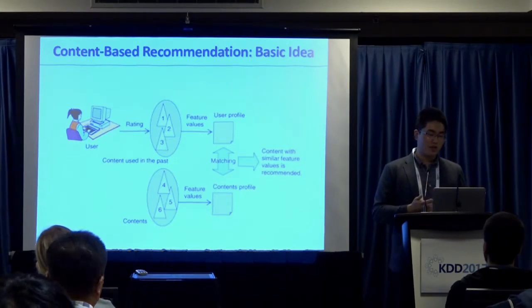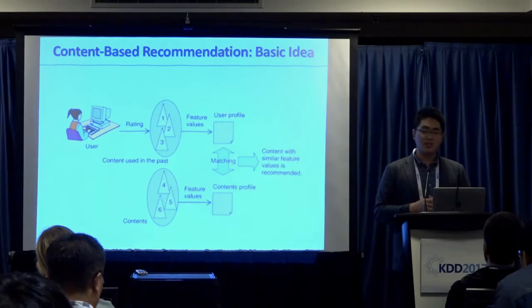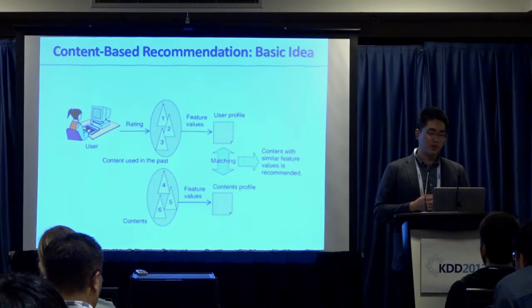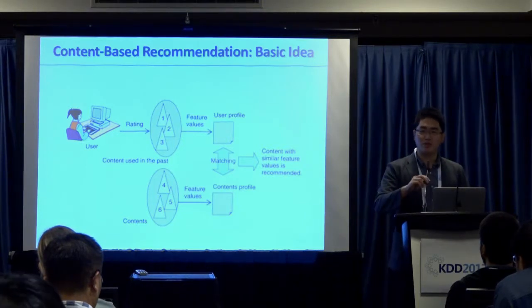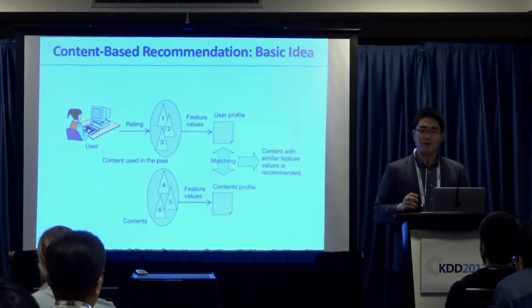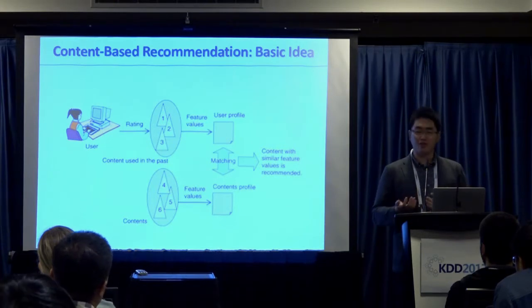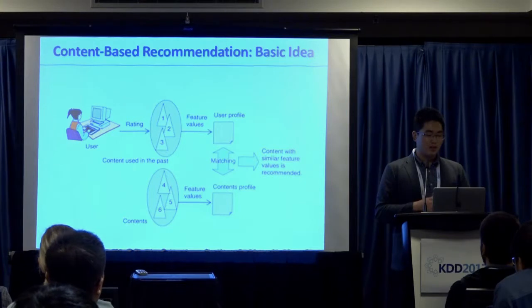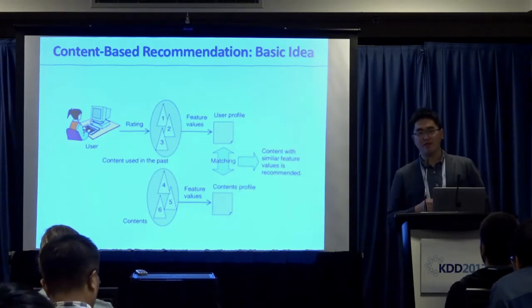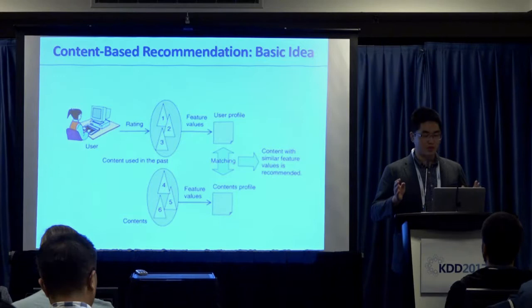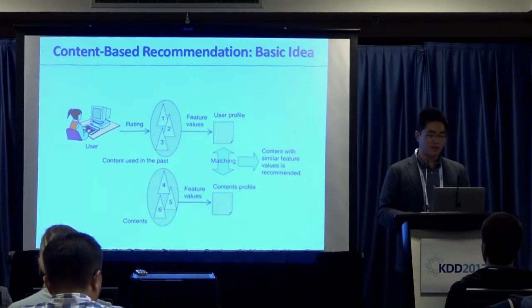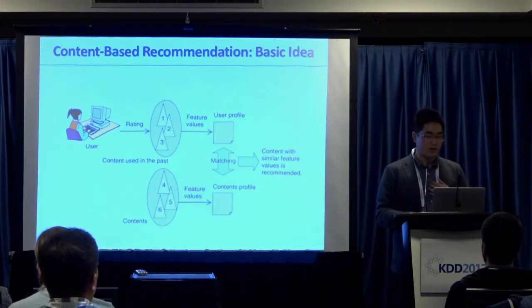In more detail, the system needs to first understand the user — transform the user into a profile, for example a feature vector using the feature-based approach. Then you transform items into feature vectors, and you match the user profile with the content profile to get a similarity score.